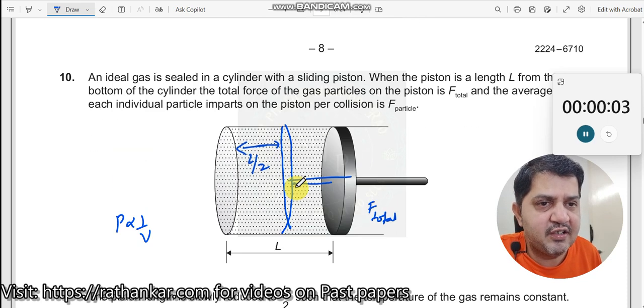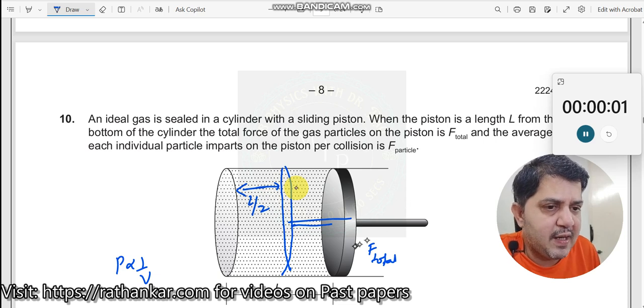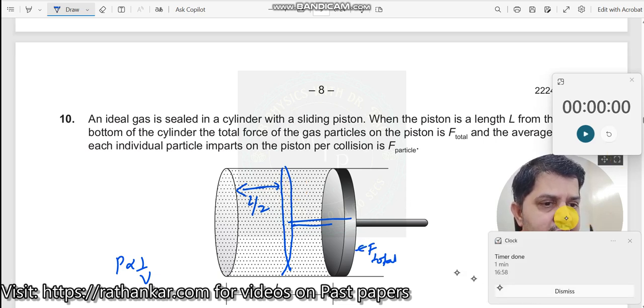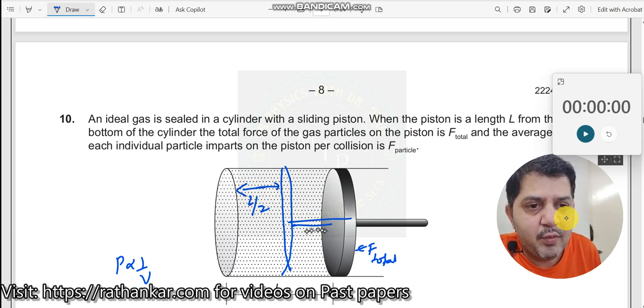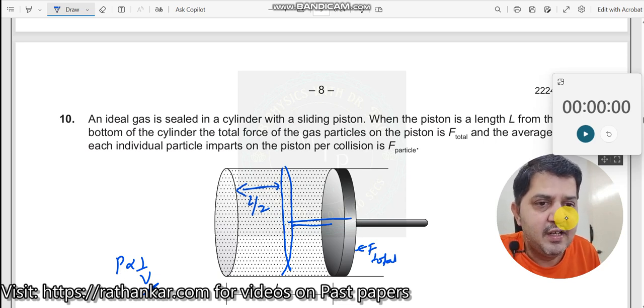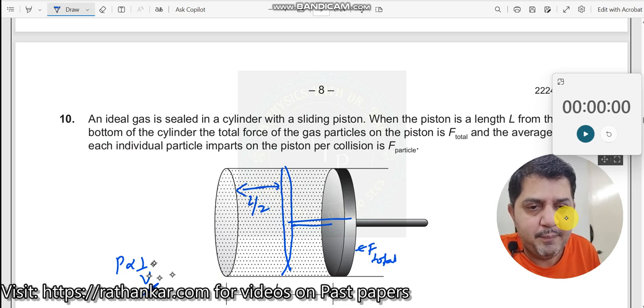Now let us understand the question. When you are applying a force and the object starts moving, the volume reduces. When volume reduces, what happens to pressure? Pressure increases. When you are decreasing this volume by half, pressure will double.